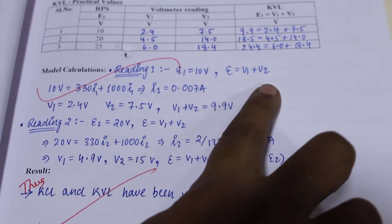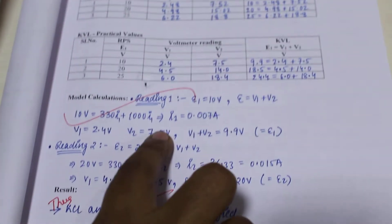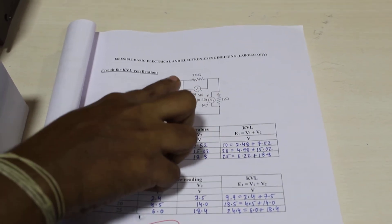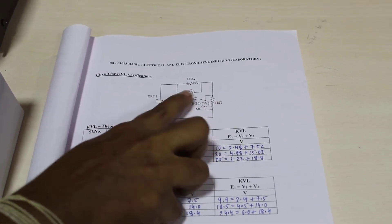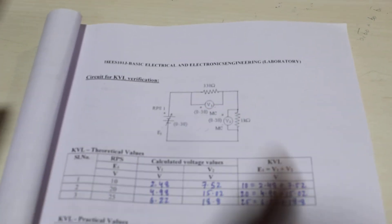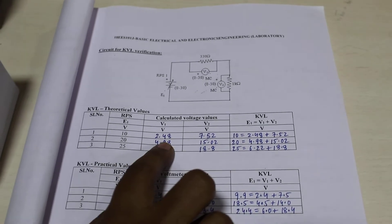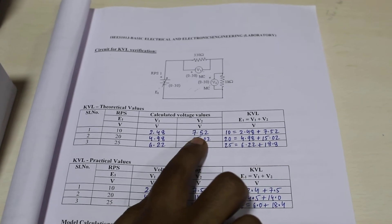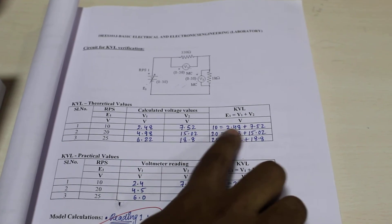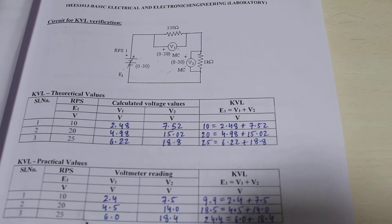E is equal to 10 volts. E will be equal to V1 plus V2. Write the current loop equation for this and obtain the current value. Since it is going to be a series circuit, once the current is known, when it is multiplied with the resistor, you will get the voltage across these two resistors, V1 and V2. You will get the value as 2.48 and 7.52 for the input voltage of 10 volts. When it has been checked up, this KVL will be verified.